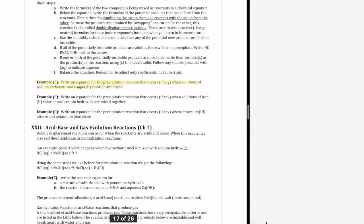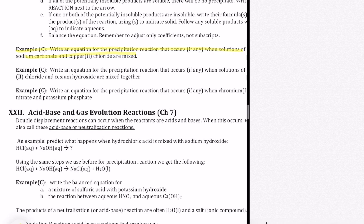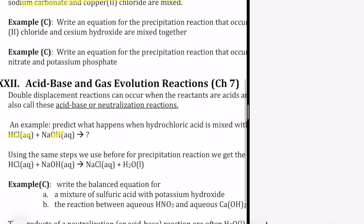We talked about double displacement reactions that generate a solid product, which we call a precipitate. Here, we will talk about double displacement reactions where the reactants are what we call acids and bases. Recall that acids are covalent compounds whose formulas start with H and are in an aqueous state. Bases are soluble ionic compounds containing the hydroxide ion or OH-. So an example of an acid-base reaction is the reaction between hydrochloric acid and sodium hydroxide. To predict the products, you will use the same steps that we use for the precipitation reaction.